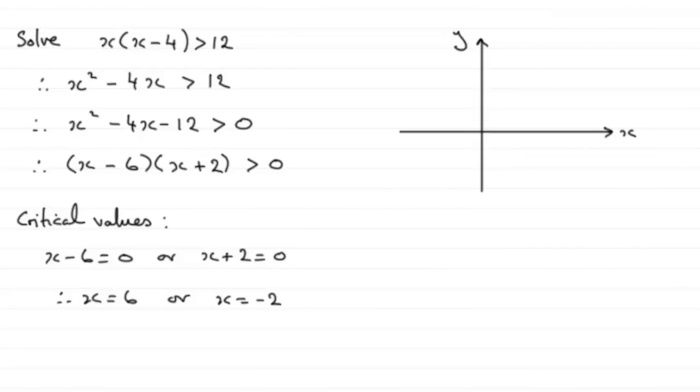Points where if we draw the graph of y equals x minus 6 multiplied by x plus 2. What we have up here. If we sketch this graph we know that y will equal zero when x is 6 and minus 2.